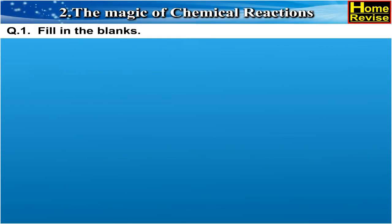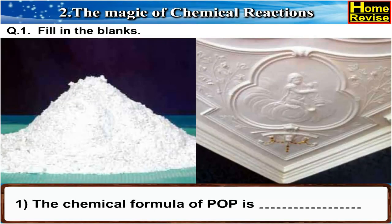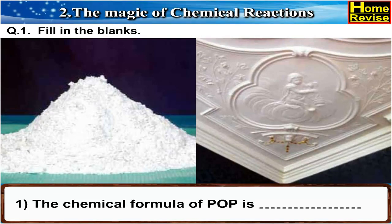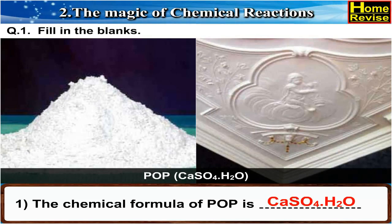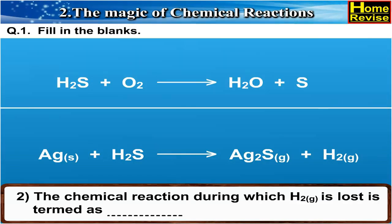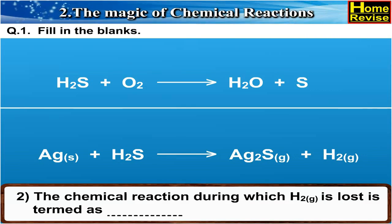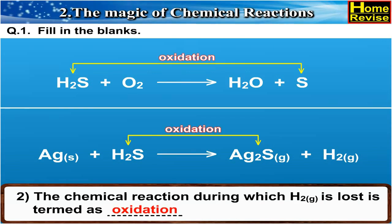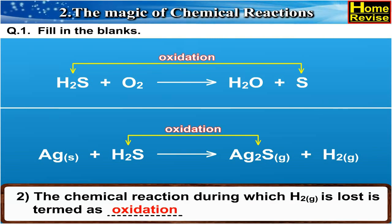Exercises. Question 1: Fill in the blanks. 1. The chemical formula of Plaster of Paris is blank. 2. The chemical reaction during which hydrogen gas is lost is termed as blank. The answer is: the chemical reaction during which hydrogen gas is lost is termed as oxidation.